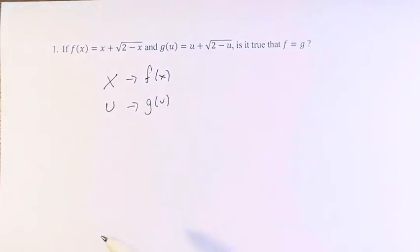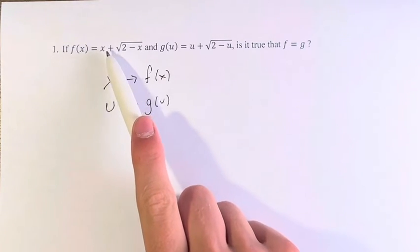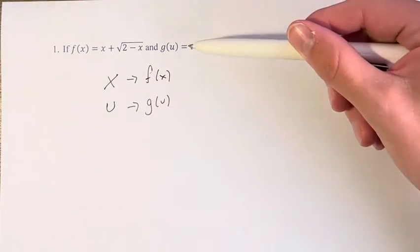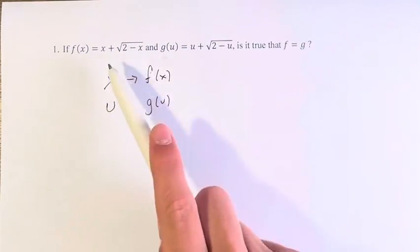And if we look at our two functions, we have f of x: x plus the square root of 2 minus x, which is the same as u plus the square root of 2 minus u. There's just different variables.